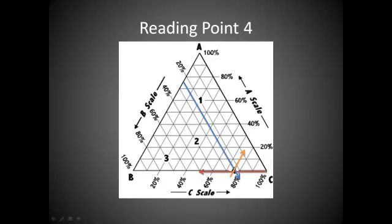Here we are looking at point number 4, and point number 4 has an A value of 0%, a B value of approximately 25%, and then on the C value you are looking at approximately 75%.